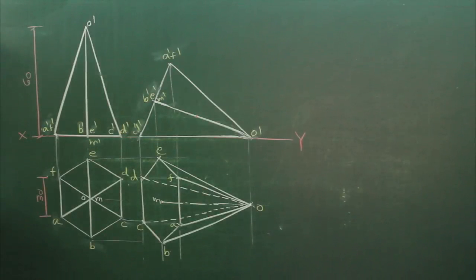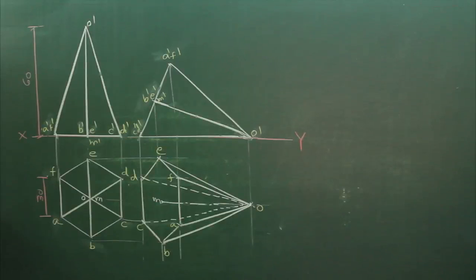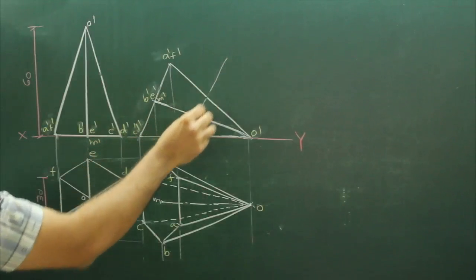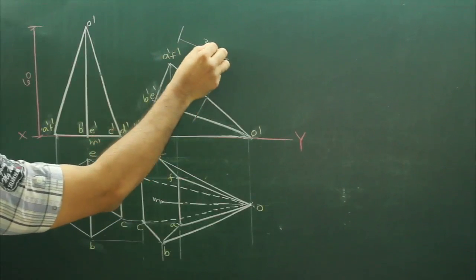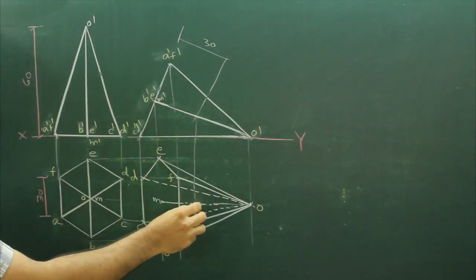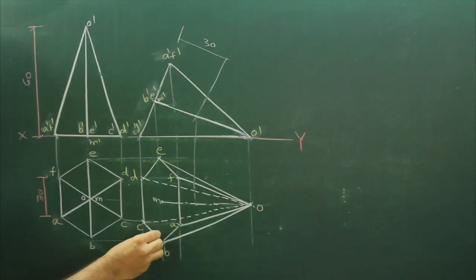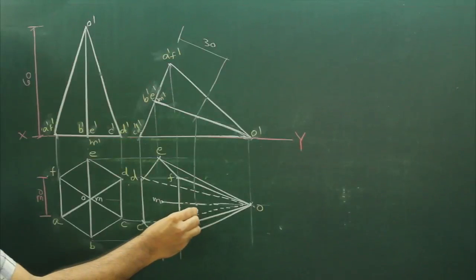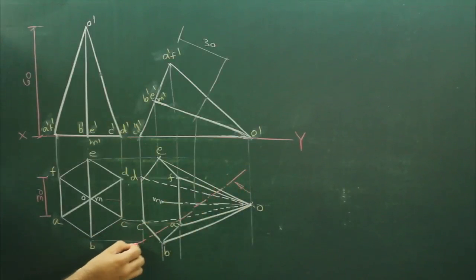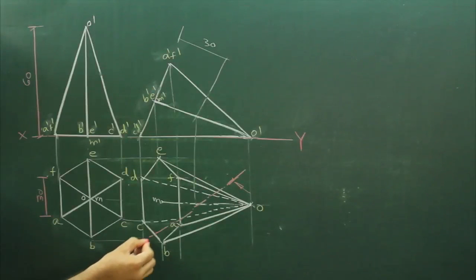Now first what we will take, first we will take half of this. It is resting on one of its triangular faces. Then we will mark 30 on this. That is half of the axis. From here we will go down on the axis line and over there we will cut at 30 degrees. We will cut like this.